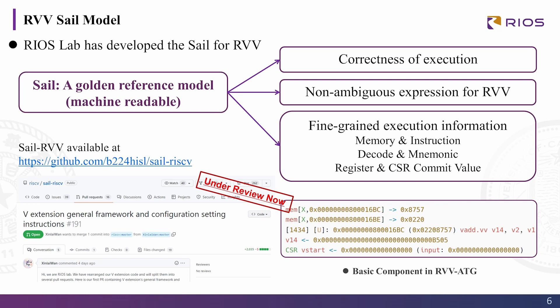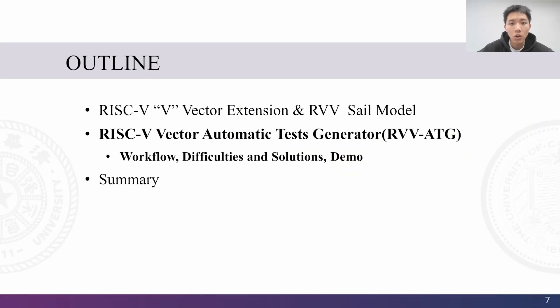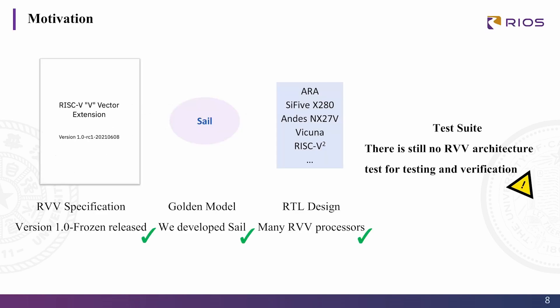Our SAIL RVV has already issued a pull request and is under review. Moving to the Automatic Test Generator, RVV-ATG: the RISC-V Vector extension has reached 1.0 frozen status and we developed a SAIL version of the spec, getting the golden reference model. There are already many RISC-V processors implementing vector extension like ARA and SAIL5. But we still lack an important thing — a test suite. There is no open source and comprehensive RVV architecture test for testing and verification.